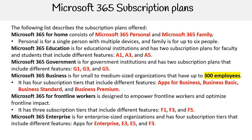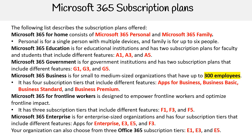We have Microsoft 365 Enterprise, which is for enterprise sized organizations and has four subscription tiers that include different features: Apps for Enterprise, E3, E5, and F3. Your organization can also choose from three Office 365 subscription tiers: E1, E3, and E5.